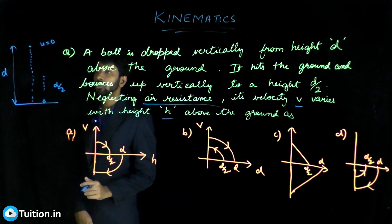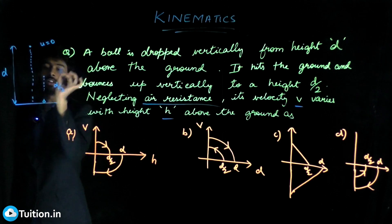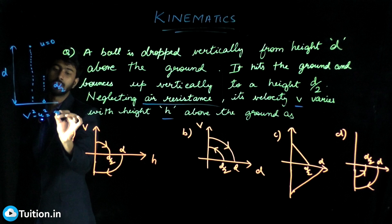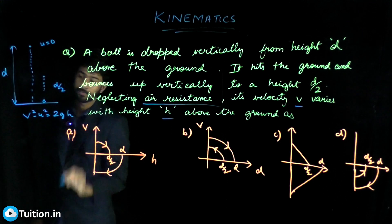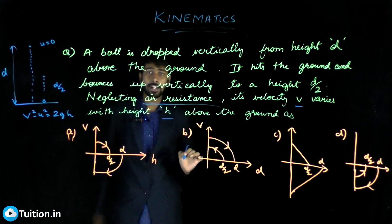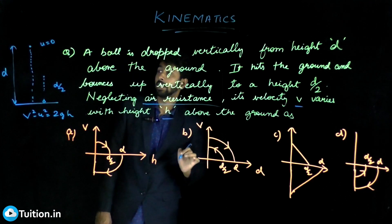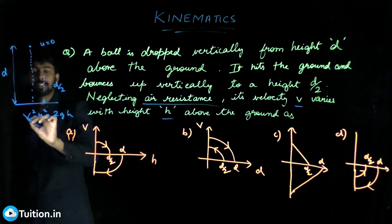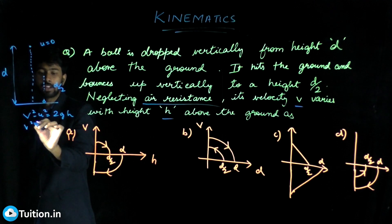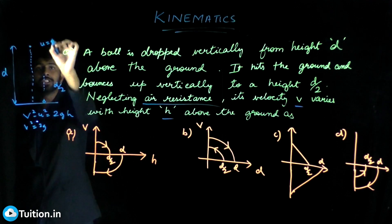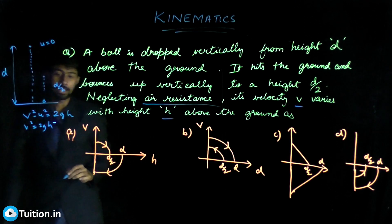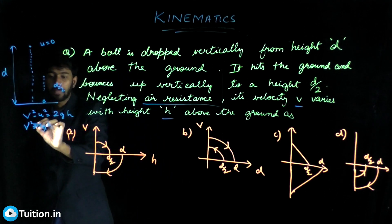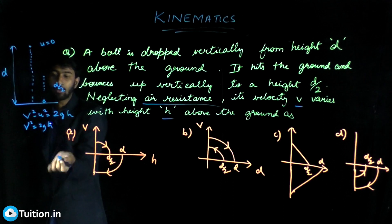Ultimately, what we use is the third equation of motion: v² − u² = 2gh. This isn't incorporating sign and direction yet, but since u = 0, it simplifies to v² = 2gh. So the graph between velocity and height is a parabola because it's of this form.